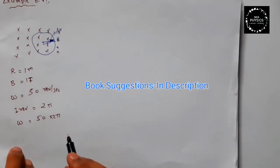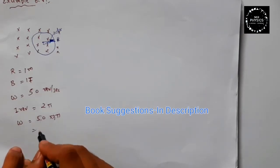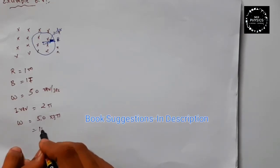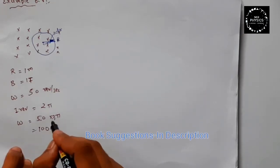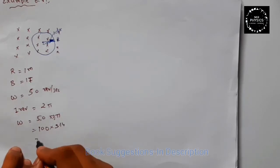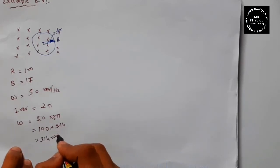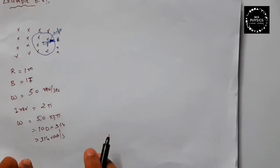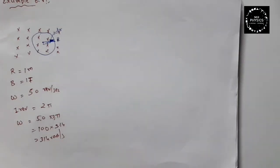We are talking about 50 revolutions, so omega equals 100π, which is 100 into 3.14, giving us 314 radians per second. Now we need to define and calculate epsilon (EMF).